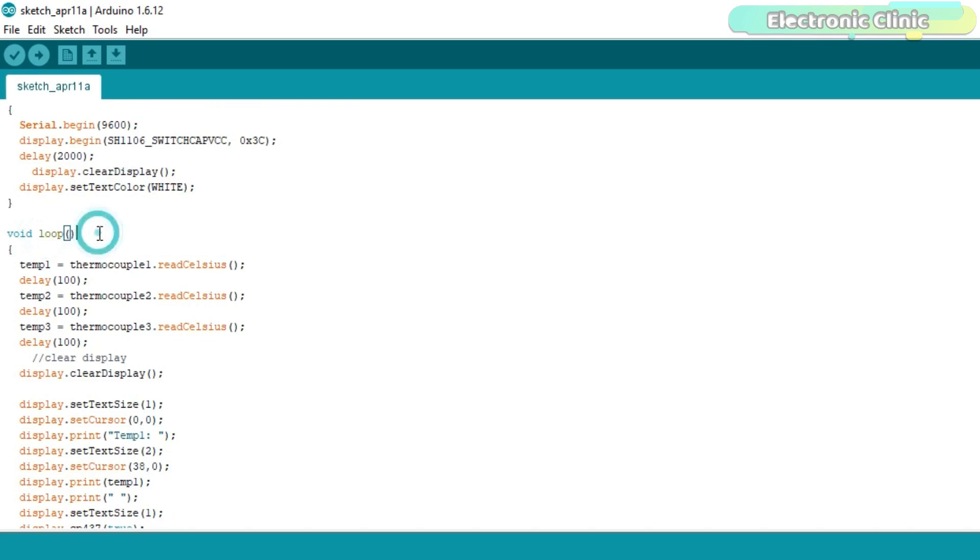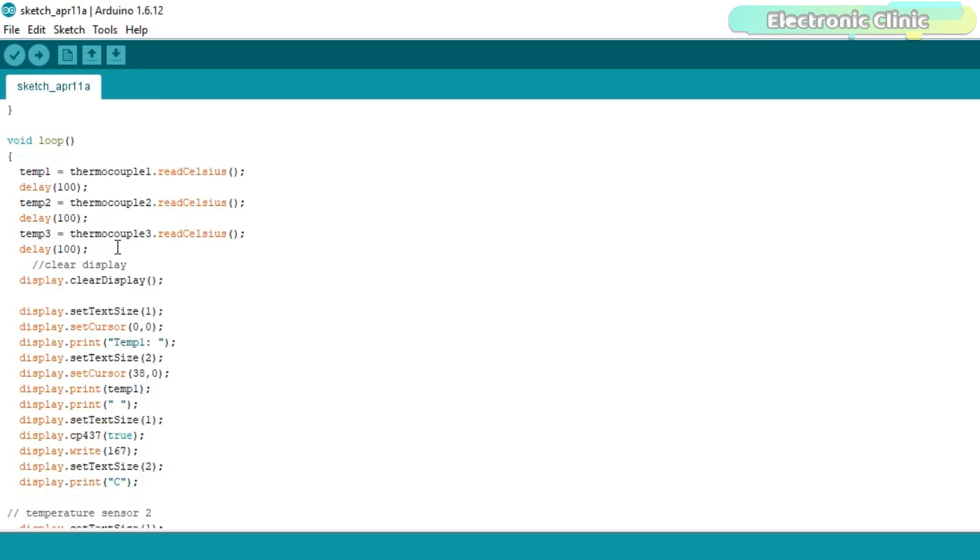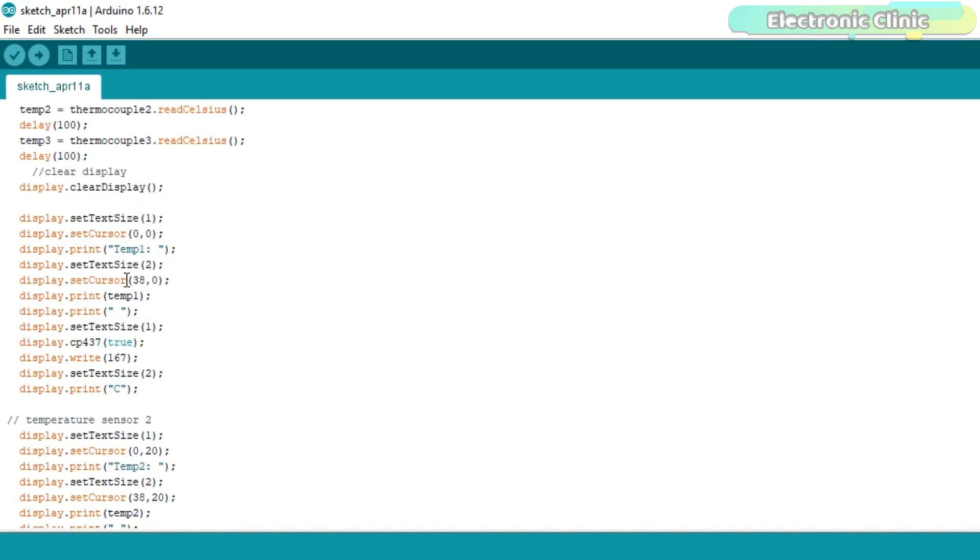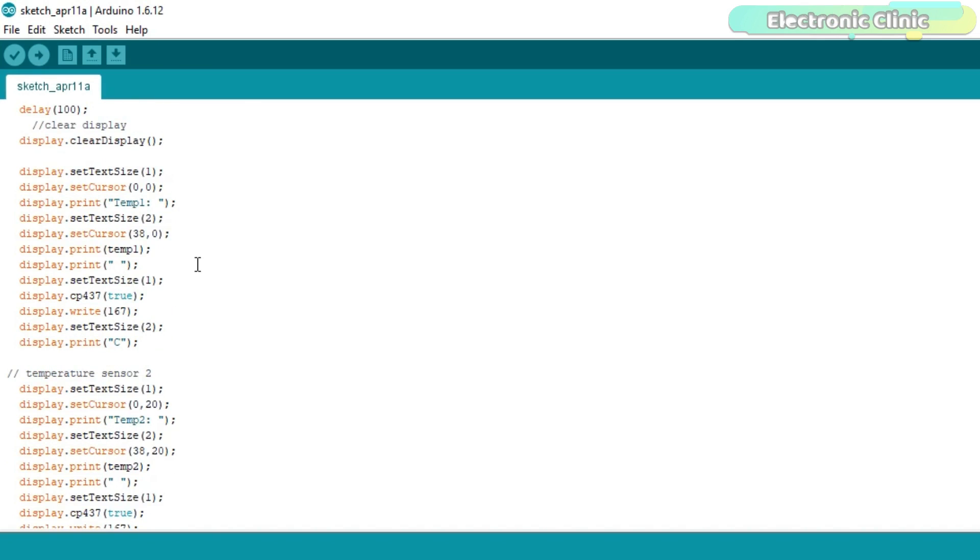Then starts the void loop function. First, we read all three temperature sensors and store the values in variables temp1, temp2, and temp3. Before you display the values on the OLED display module, make sure you clear the display. Rest of the instructions are exactly the same as explained in my previous tutorial on the OLED display module. The purpose of these instructions is to set the text size, select the cursor position, display the text and temperature values.